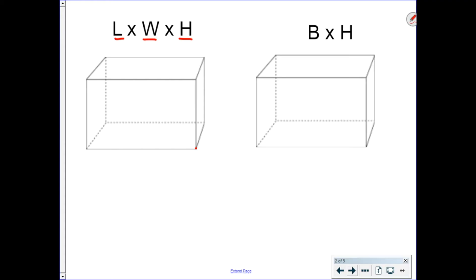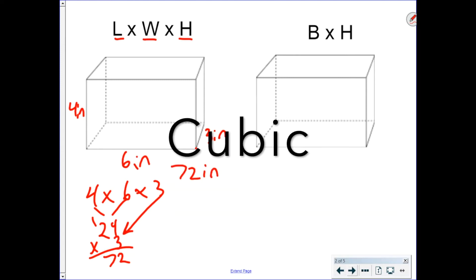Very simply put, if this were four inches, this were six inches, and this were three inches, my volume would be length times width times height, four times six times three. In order to do this, we multiply the first two, four times six is 24, and then multiply that by three. Four times three is 12, two times three is six, plus one is 72. So the answer is 72 cubic inches.